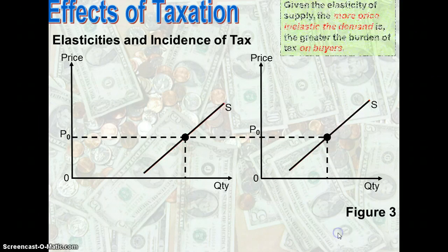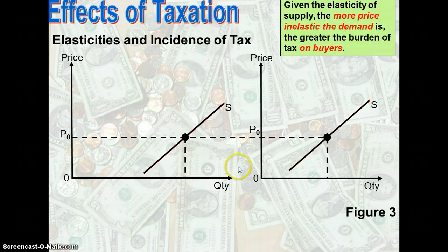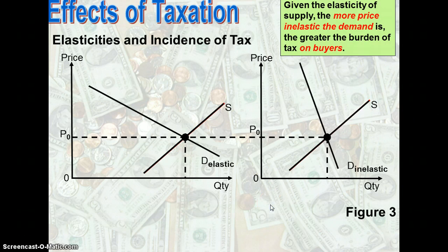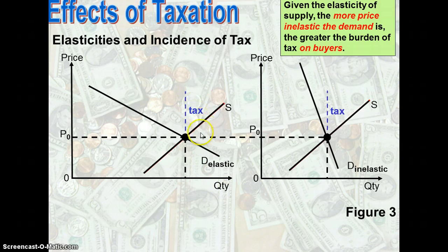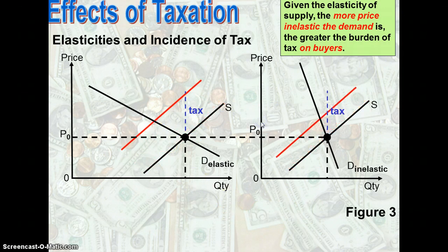Let's look at two diagrams. In the first case, given the elasticity of supply, the more price inelastic the demand curve is, the greater the burden of tax on the buyers. Both diagrams have supply curves of the same elasticity — the slope is the same. The demand curve on the right is relatively price inelastic, while the demand curve on the left is relatively more price elastic. Given a specific amount of tax imposed — the same for both diagrams — the supply curve will shift up by the amount of tax imposed.